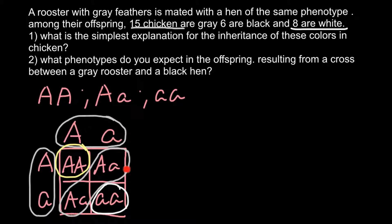According to our Punnett square, we see that the ratio of gray in the F1 generation would be 2 black to 1 white. And this is what we see here in these ratios: 15 chickens gray, 6 black, and 8 white. The ratio is about 2 to 1 to 1. So this picture explains and gives an answer to the first question.